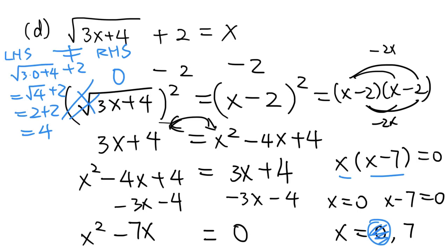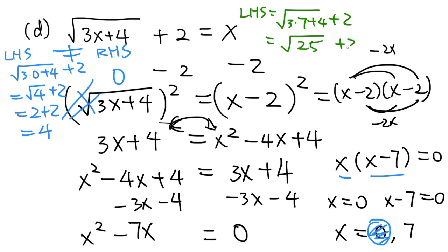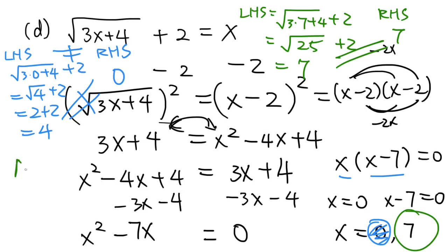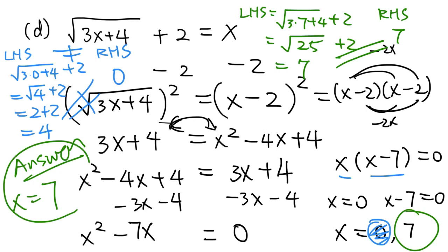Next, let's check x = 7. The left-hand side is square root of 3 times 7 plus 4, plus 2. That is square root of 25 plus 2, which is 5 plus 2, equaling 7. On the right-hand side we have x = 7. So both sides are equal, and we can take 7 as the solution. There is only one solution, and that is 7.